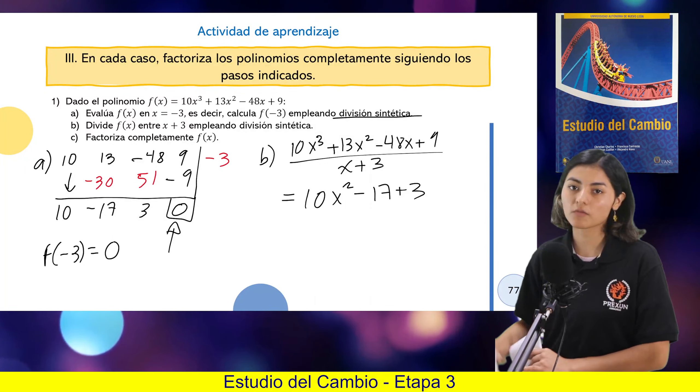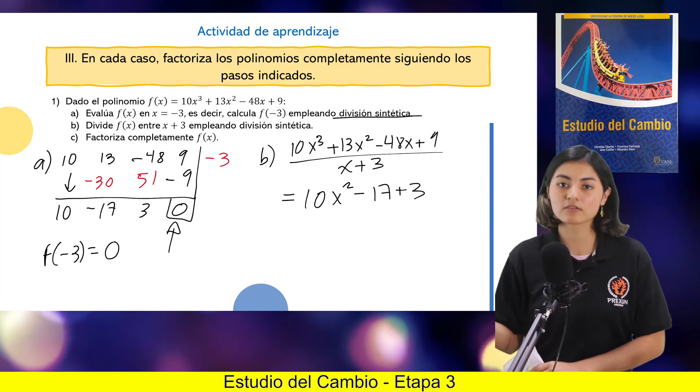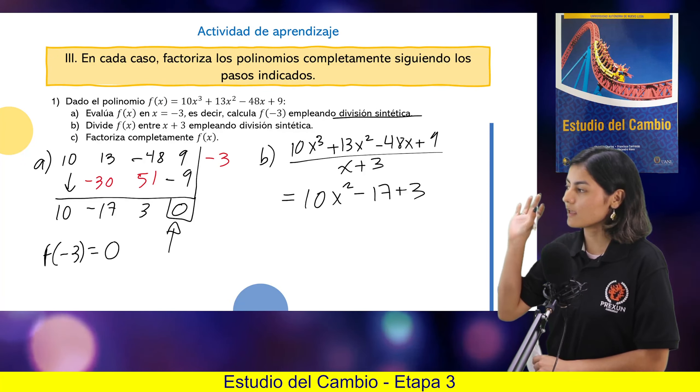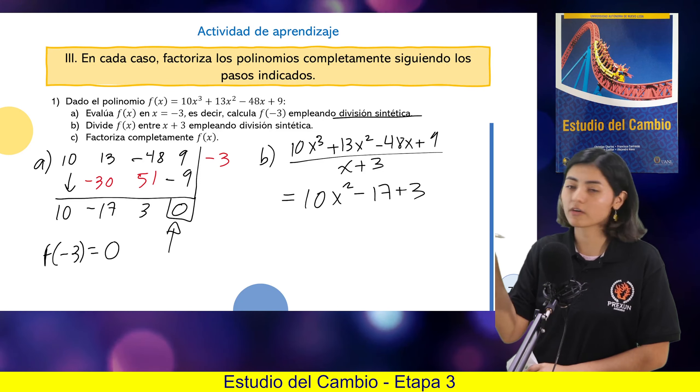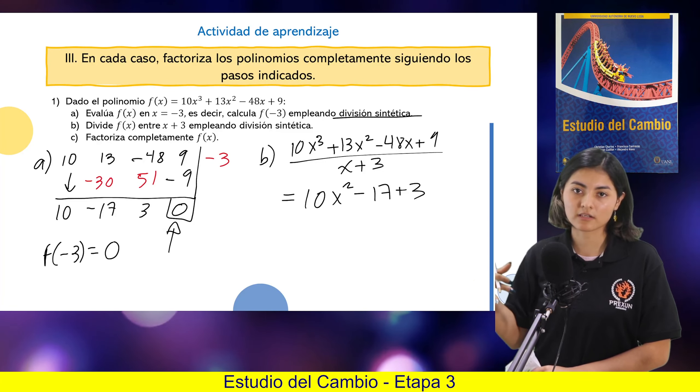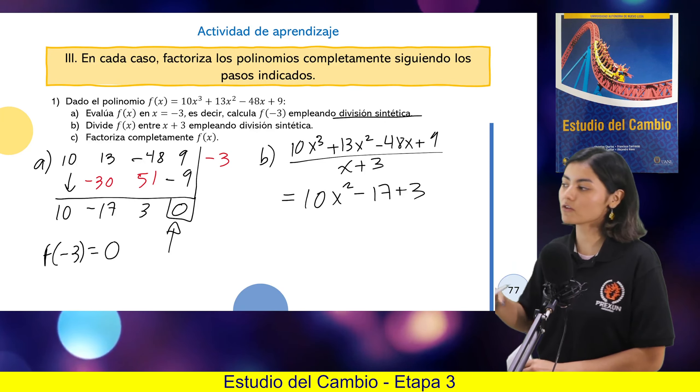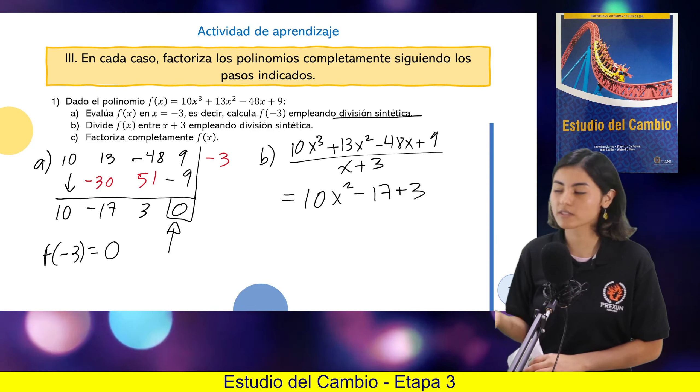Entonces en el anterior video platicamos el inciso A, el inciso B. En grandes rasgos nos están pidiendo que evaluemos un valor en un polinomio, después que dividamos un polinomio entre cierto otro polinomio y además que factoricemos. Claramente todo esto va a estar relacionado en una sola cosa.